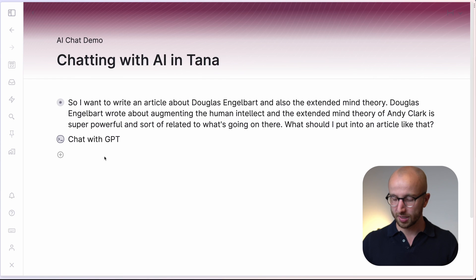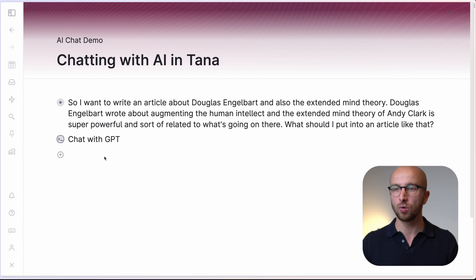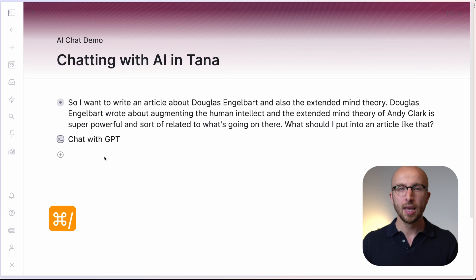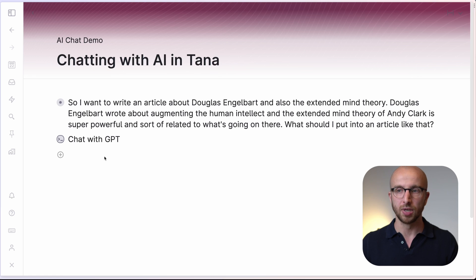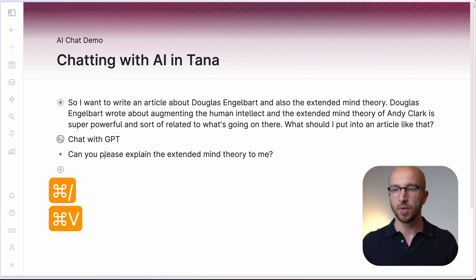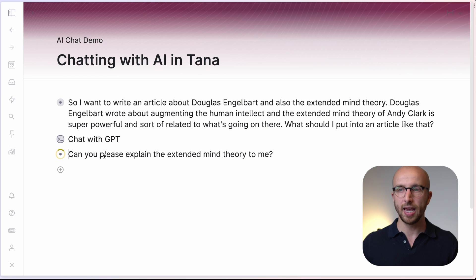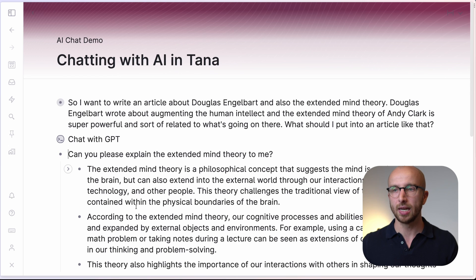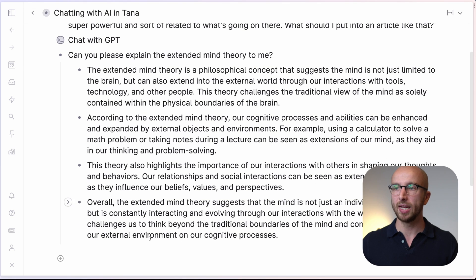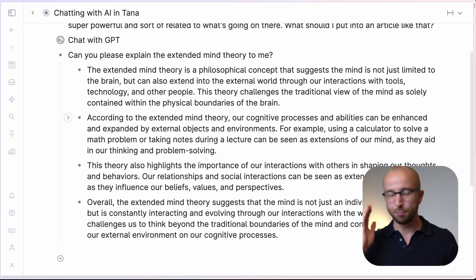I hit the first shortcut — I've set this to Command Slash in Super Whisper, but you can use whatever you want. So I say: "Can you please explain the extended mind theory to me?" Hit that shortcut again to stop recording, and now hit Command J. It runs the AI command and we get a response explaining what the extended mind theory is — just like that, boom boom.